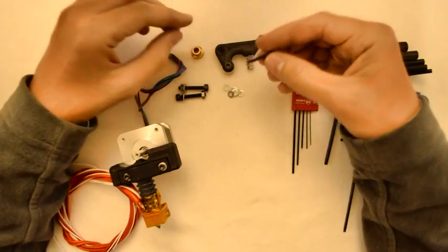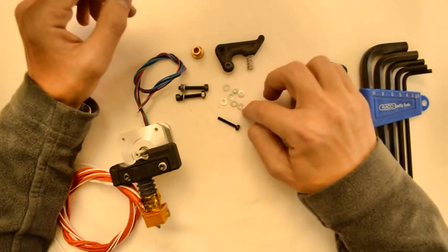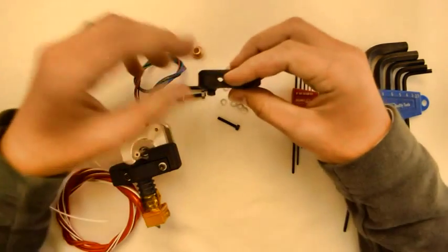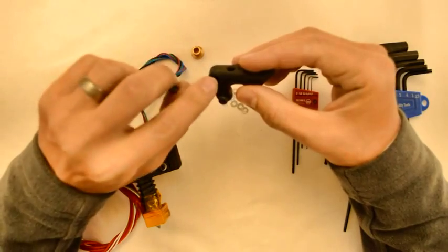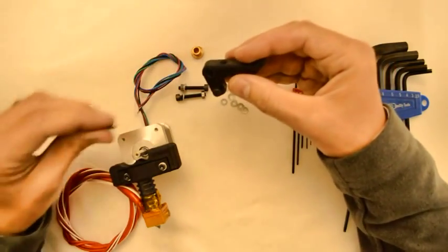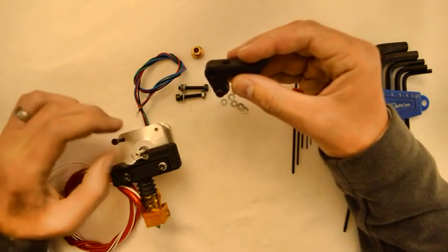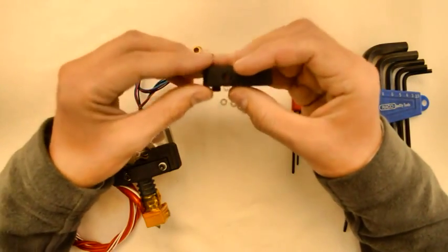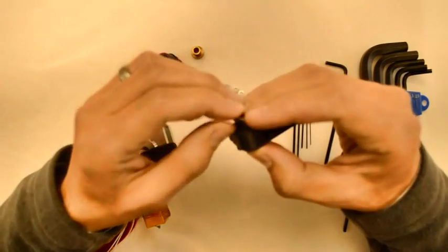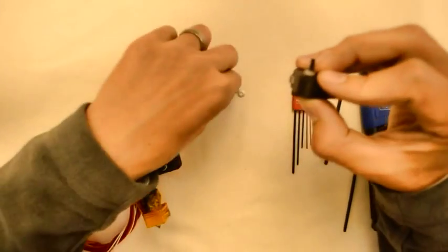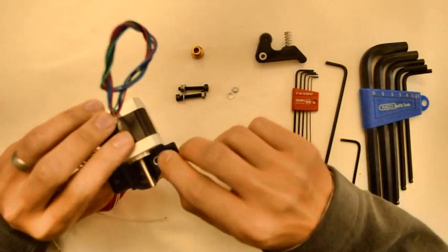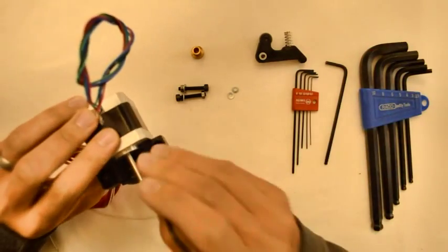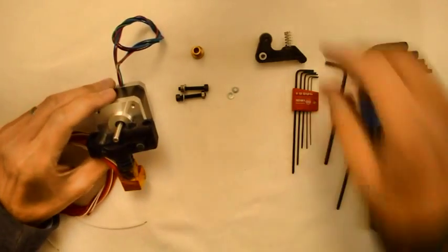For this we'll use the last M3 screw and also some of the washers. Now you can play around with the amount of washers that you use here. You can put one on the top and five at the bottom or four at the bottom, two at the top, or nothing at the top and five at the bottom. It doesn't matter. This is determined by the amount of thread that you have in your stepper motor. So in this case I'll just use five M3 washers, and before I assemble this I will put one washer on top of the M5 grub screw to be able to push the spring.